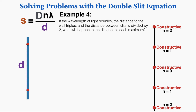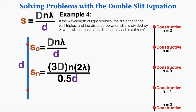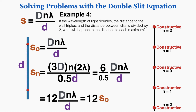In example number four: if the wavelength of light doubles, the distance to the wall triples, and the distance between slits is divided by 2, what happens to the distance to each maximum? This is a proportional reasoning problem. The original s equals the baseline expression; the new s uses the changed variables. Isolating the original variables by extracting the numbers, the new distance equals 12 times the original distance. That's how you do a proportional reasoning problem with the double-slit equation.